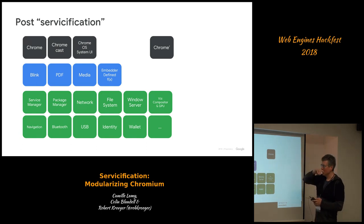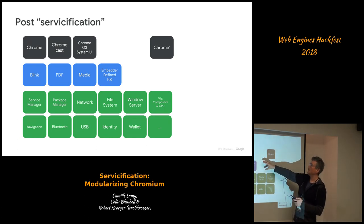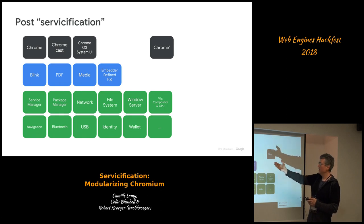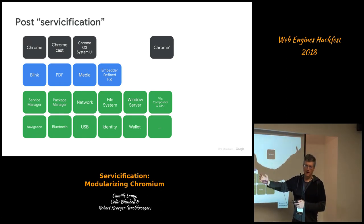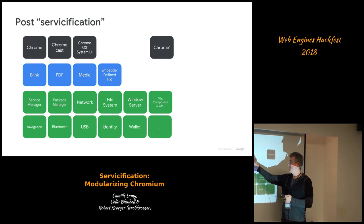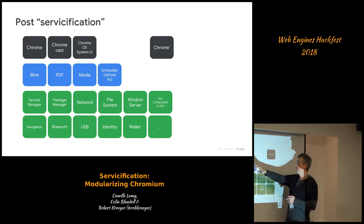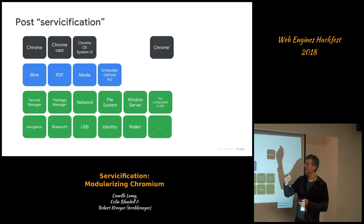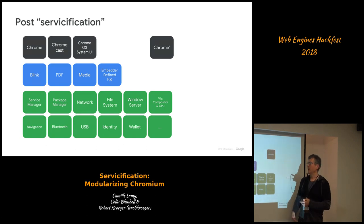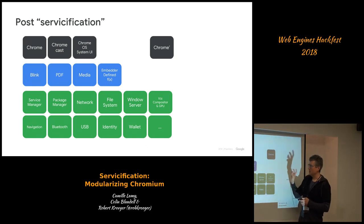We have all the core foundation bits down at the bottom, the various consumers of the services in the middle, and the actual apps that sit on top. The basic idea is that you have Chrome as an application, Chromecast and content shell as applications, and Chrome OS system UI — otherwise known as Ash — as an application, separated from the Chrome application at long last. And then there's a series of foundational technologies: Blink, the PDF viewer, and other stuff, plus all our base services.